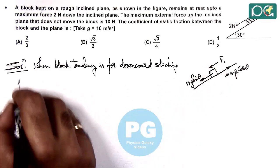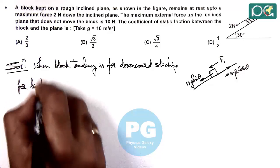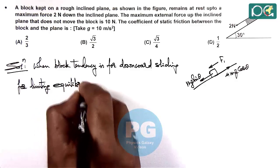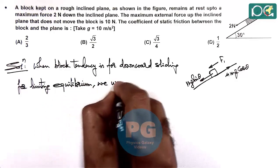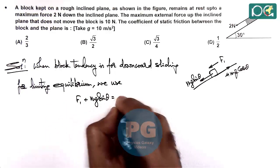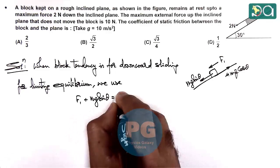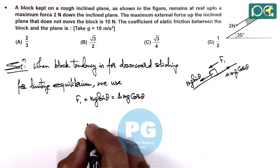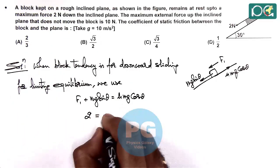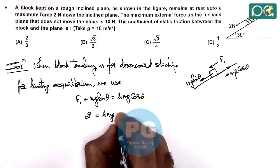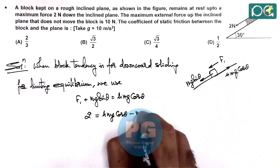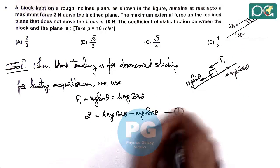For limiting equilibrium, we use F1 + Mg sin θ = μ Mg cos θ. Substituting F1 = 2N, we get 2 = μ Mg cos 30° - Mg sin 30°. This is equation 1.